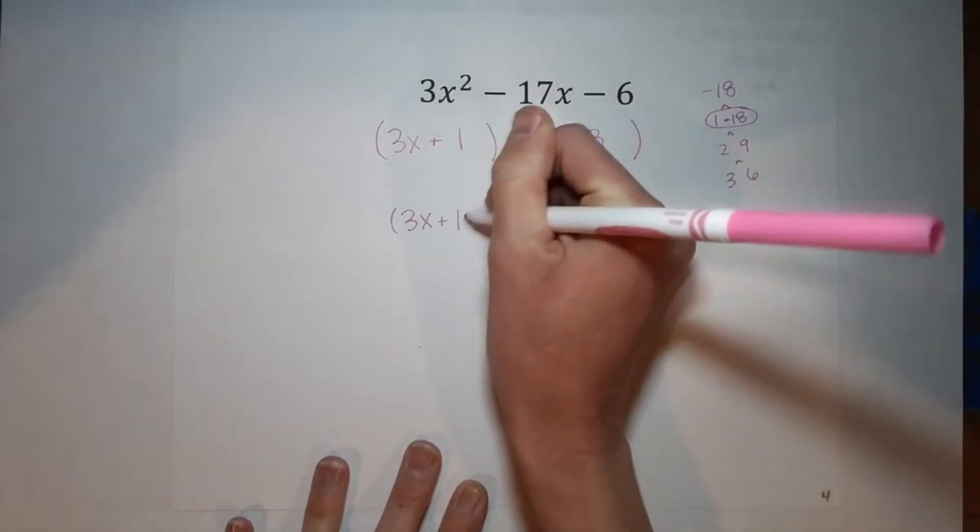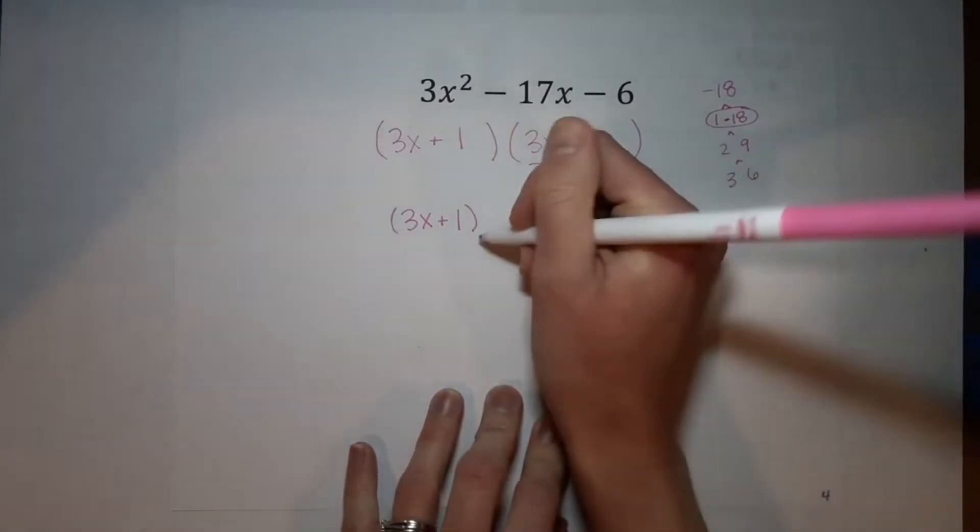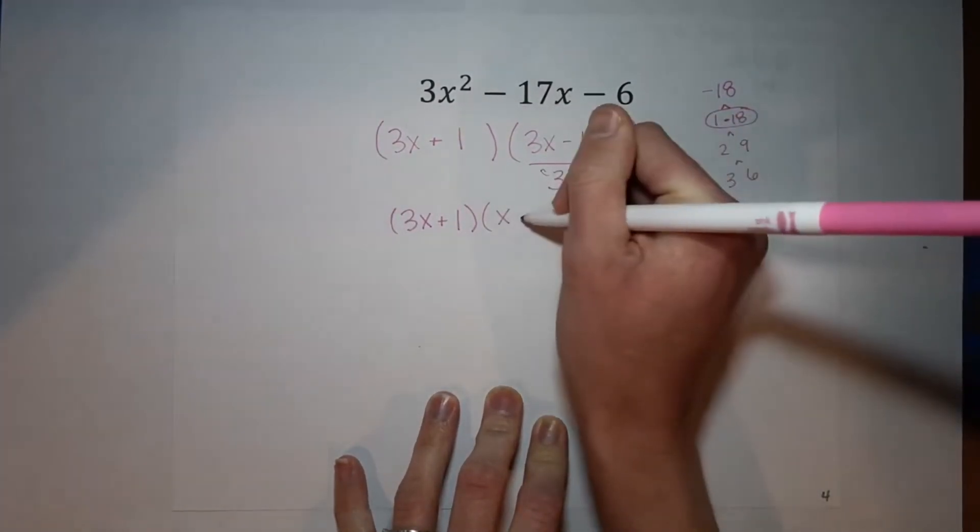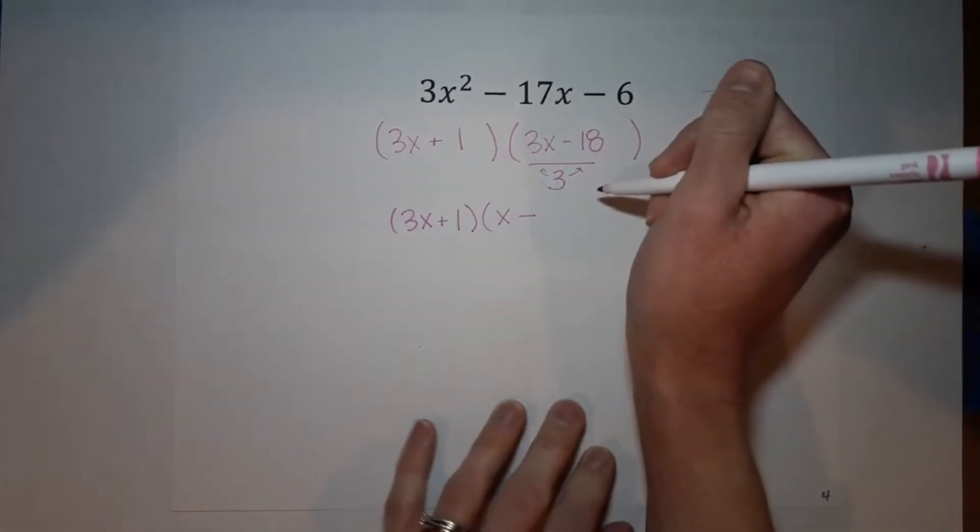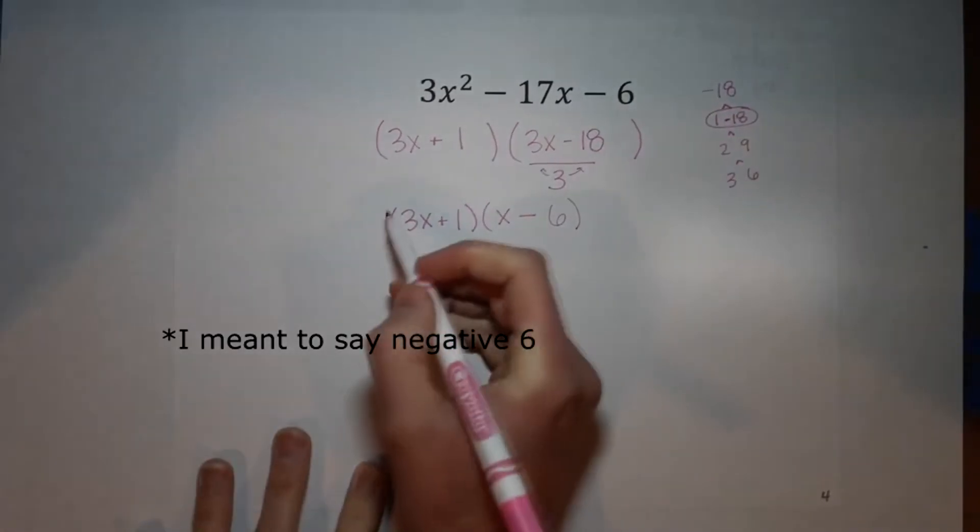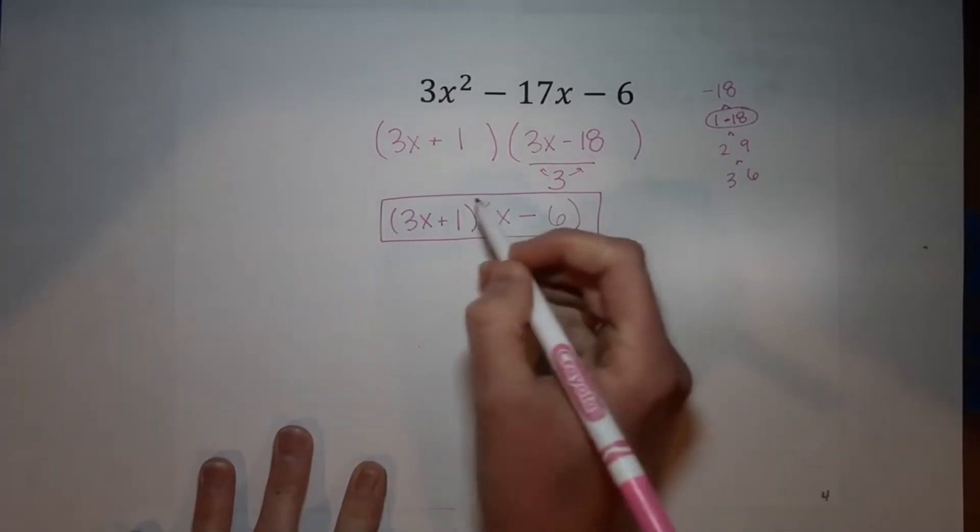So I'm taking out my extra three. So this side is still 3x plus one. This one, make sure you pull it from both of them, right? So there they cancel. Negative 18 divided by 3 gives me 6. And that is our answer. You can always, always, always multiply it out to make sure that you get this.